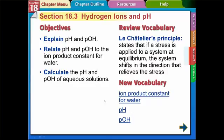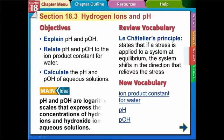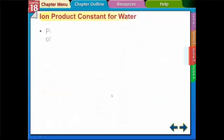The main idea here is that pH and pOH are logarithmic scales that express the concentration of hydrogen ions — that's the pH — and hydroxide ions in aqueous solutions. We're going to explain what that means in the next few slides.